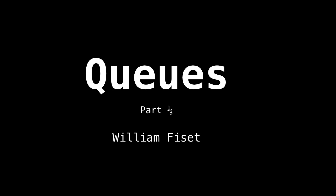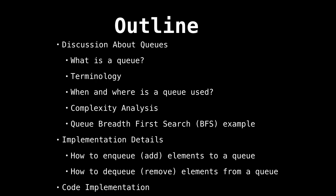Let's talk about queues, probably one of the most useful data structures in computer science. This is going to be part one of three in the queue series. The outline of things we'll be looking at: first we'll talk about what queues are, then complexity analysis, then implementation details of enqueuing and dequeuing, followed by some source code at the very end in the last video.